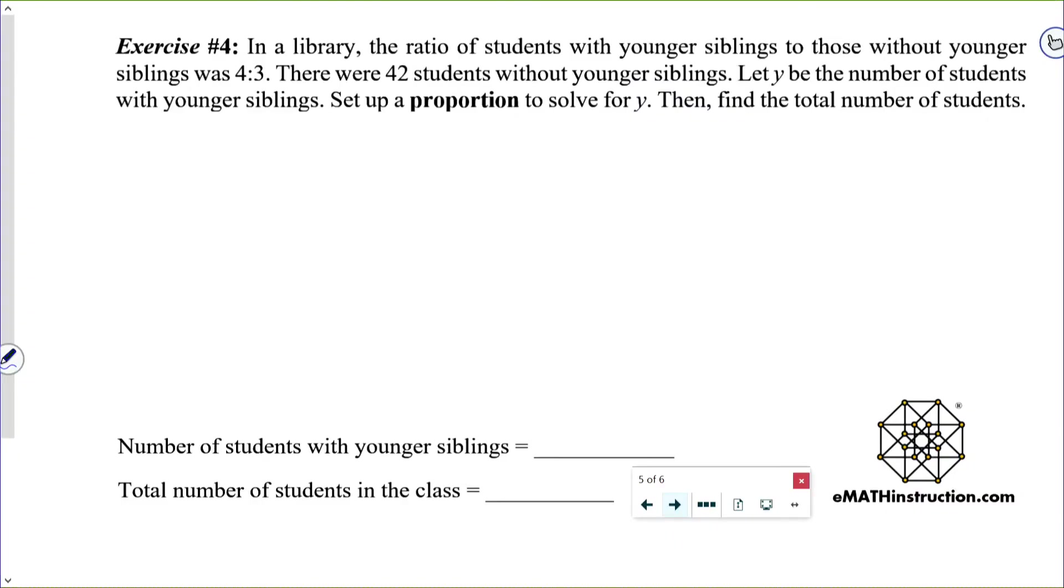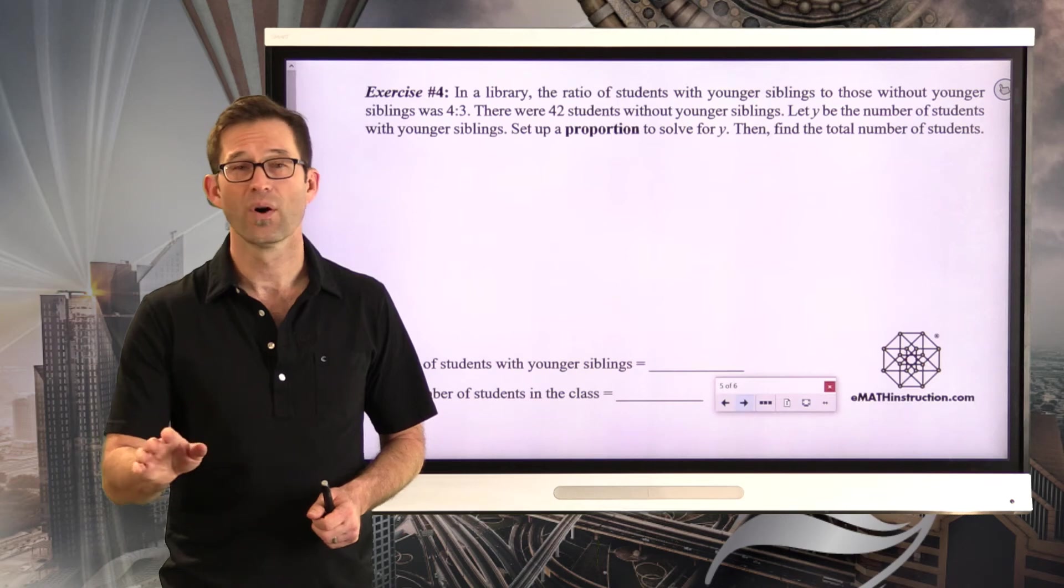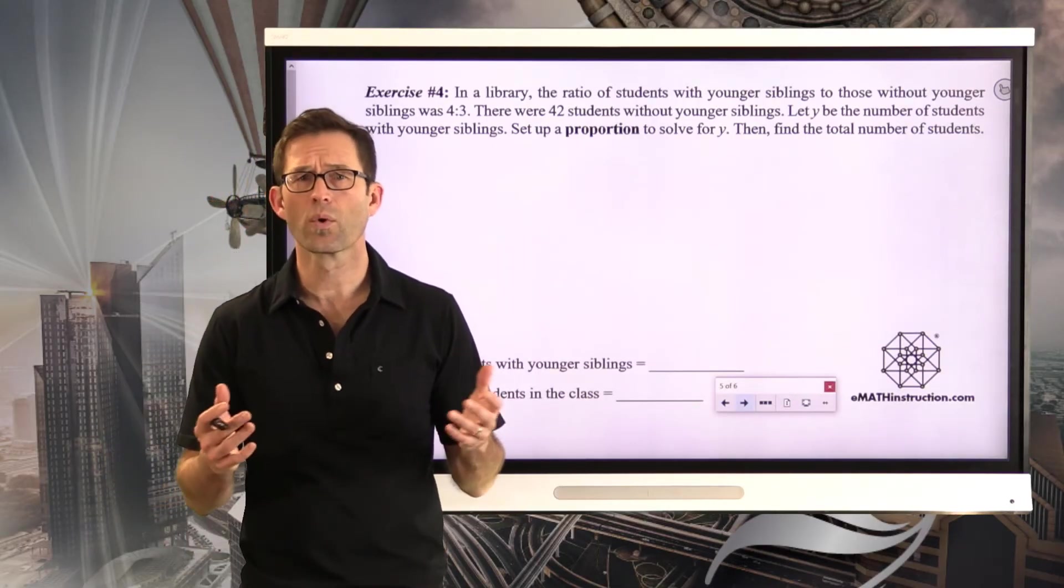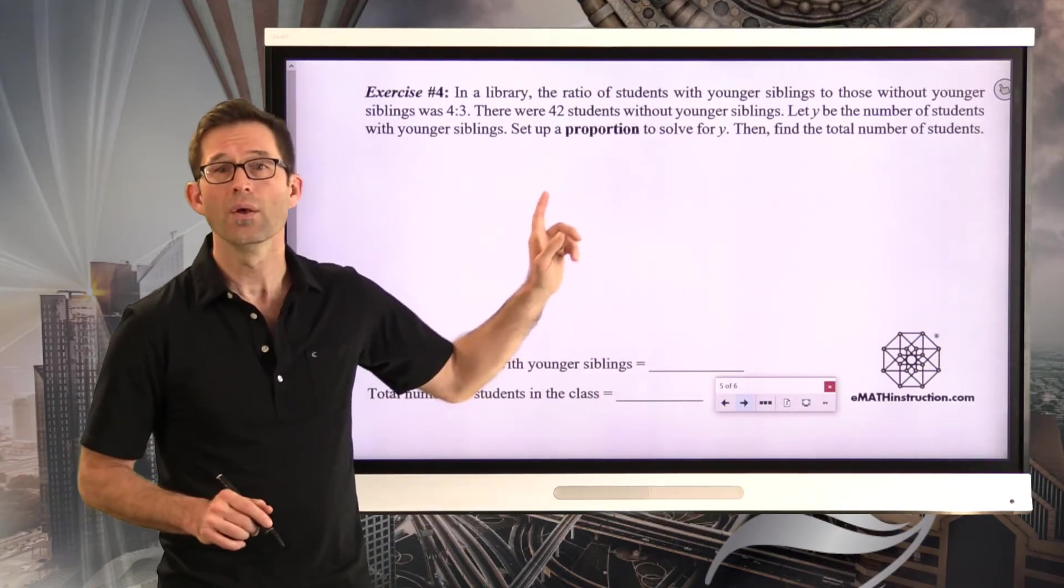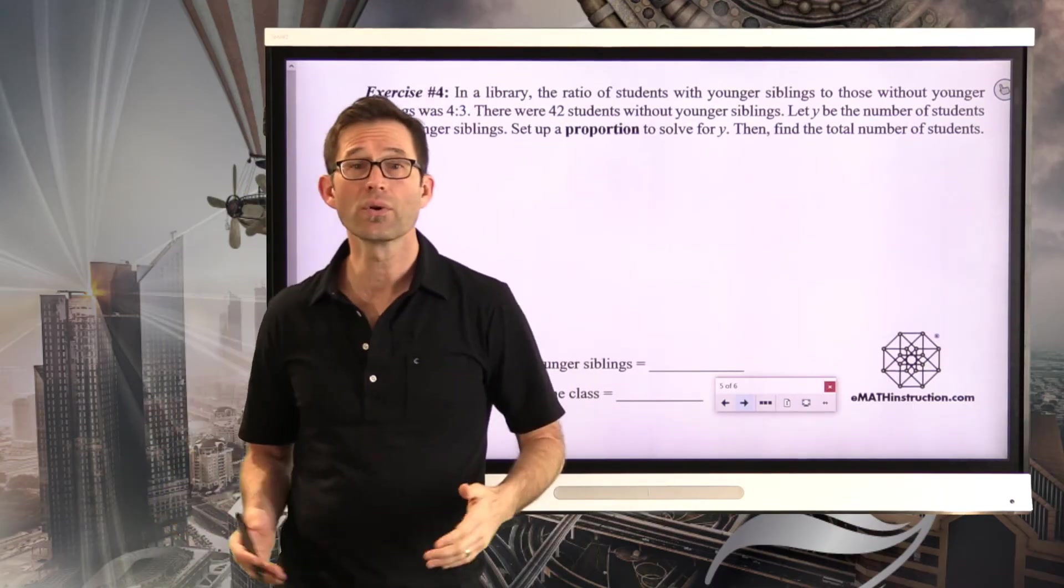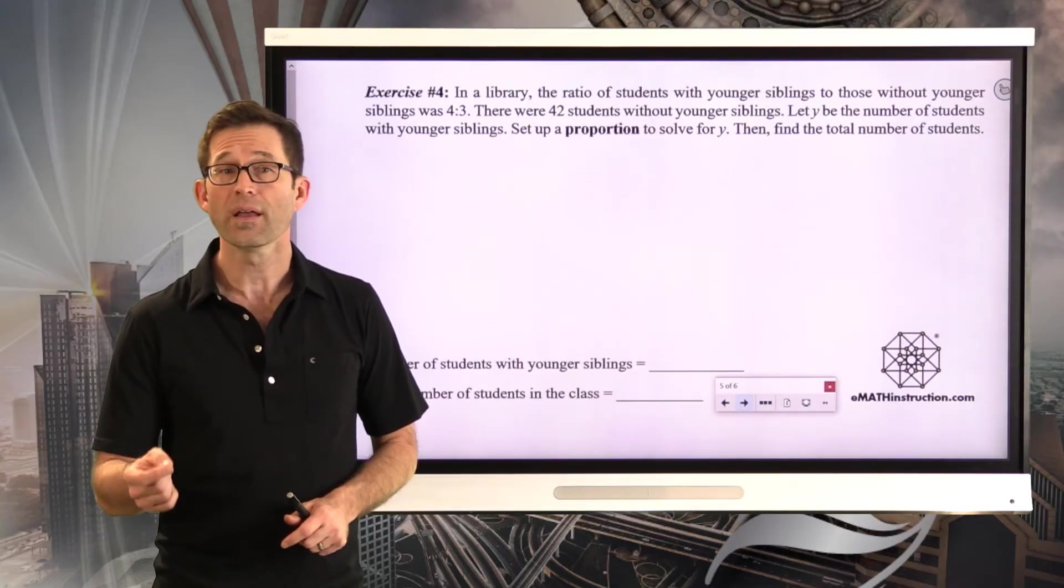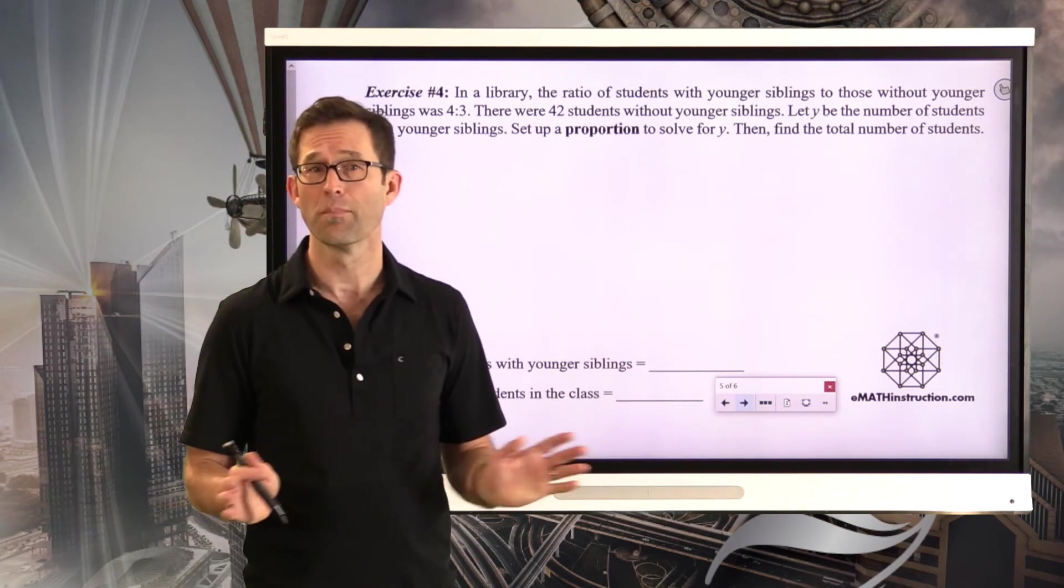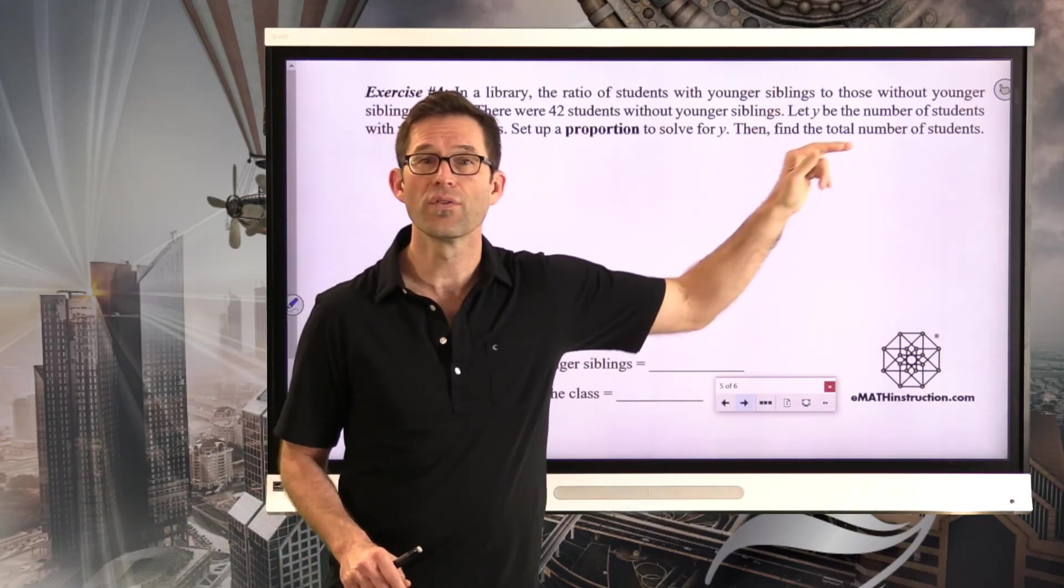In a library, the ratio of students with younger siblings to those without younger siblings was 4 to 3. There were 42 students without younger siblings. Let Y be the number of students with younger siblings. Set up a proportion to solve for Y. Then find the total number of students. I'd like you to try this problem all on your own. Well, let's make sure, because there's a lot of words in this problem, that if you don't read carefully, you can certainly get the ratios all mixed up.